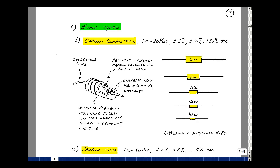I'd like to talk about some different types of resistors, the first one being carbon composition. These usually are available from 1 to about 20 megohms in 5, 10, and 20% tolerances.